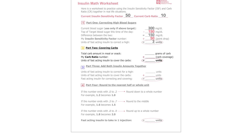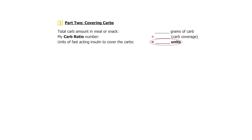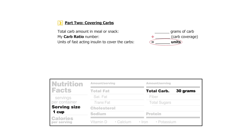On to Part 2: Covering Carbs. Carbohydrate counting is a skill explained in the video called Carbohydrates. For this example, let's say you check the nutrition label and it says there are 30 grams of carbohydrates per serving, and your child is having 2 servings — so your child will be eating 60 grams of carbohydrates. Write 60 grams of carbs. On the next line, write the carb ratio. Remember, in our example this is 10. One thing to know is that your child's carb ratio number may change as they get older. Then divide the total carbs by the carb ratio — that means we need 6 units of fast-acting insulin to cover the carbs in our example meal.